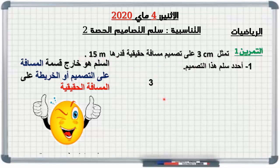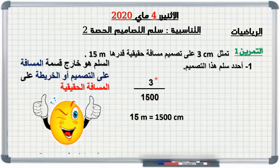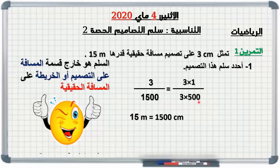إذن لدينا ثلاثة سنتيمتر نقسمها على خمسة عشر متر، نحول خمسة عشر متر إلى سنتيمتر فتساوي ألف وخمسمائة سنتيمتر. إذن ثلاثة على ألف وخمسمائة. نقوم بالاختزال: ثلاثة هي ثلاثة في واحد، وألف وخمسمائة هي ثلاثة في خمسمائة، نختزل بثلاثة فيبقى لدينا واحد على خمسمائة. إذن السلم هو واحد على خمسمائة.